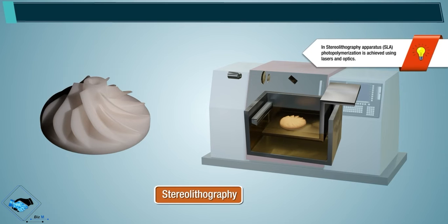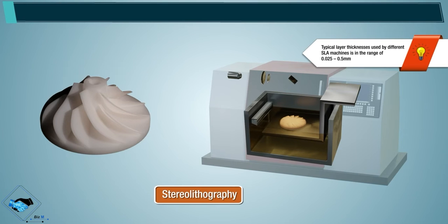In Stereolithography apparatus SLA, photopolymerization is achieved using lasers and optics. Typical layer thickness used by different SLA machines is in the range of 0.025 to 0.5 mm.